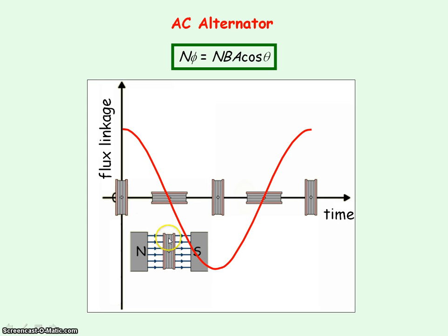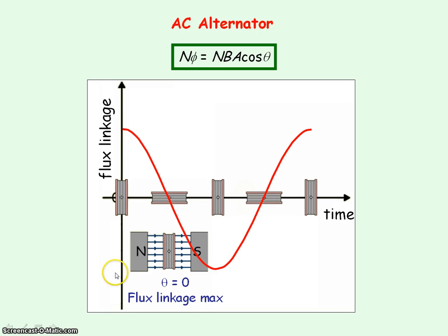When the plane of the coil is perpendicular to the magnetic field lines, then theta equals zero. So cos theta equals one, and we get maximum flux linkage through the coils. This will be at time equals zero, half a period later, and then a full period later.